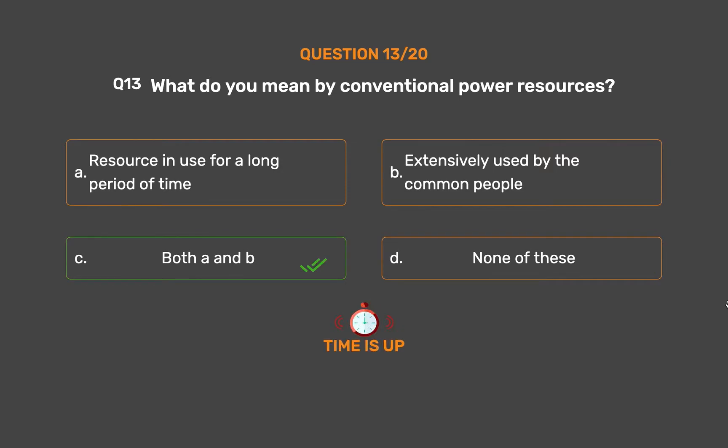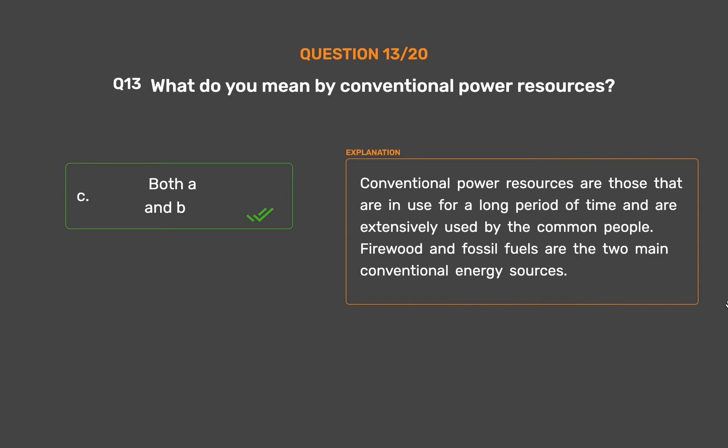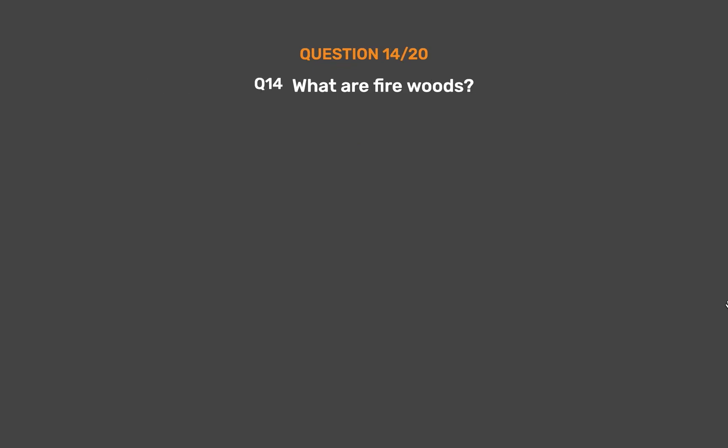The correct answer is Option C: Both A and B. Conventional power resources are those that have been in use for a long period of time and are extensively used by the common people. Firewood and fossil fuels are the two main conventional energy sources.